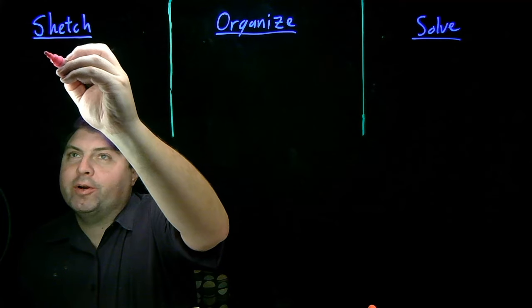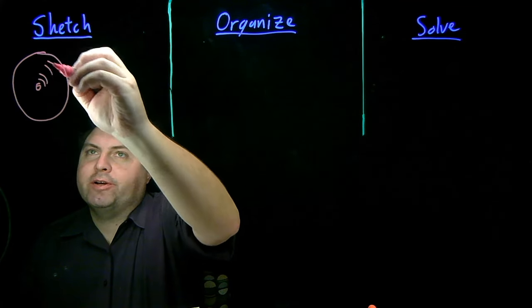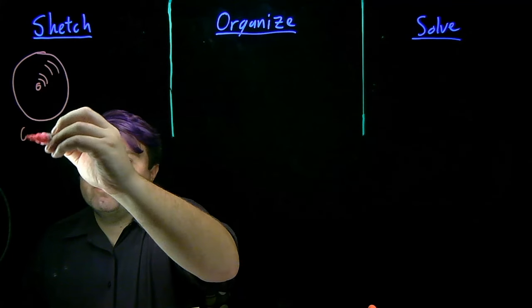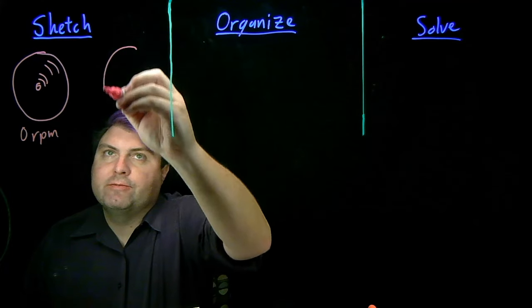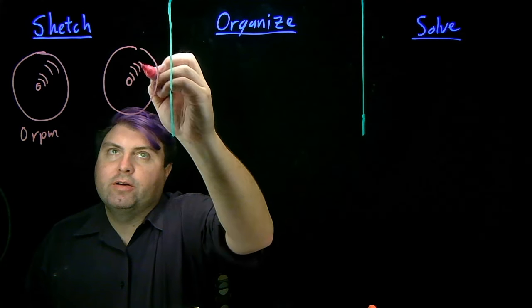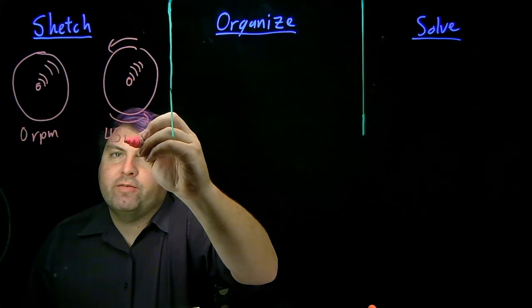We have here a record. We're going to place it on a record player. While we place it on the record player, it's going to go from zero RPM and eventually speed up to its final speed of 45 RPM.